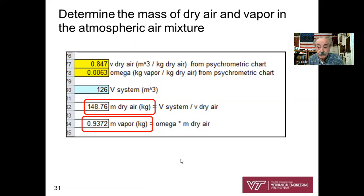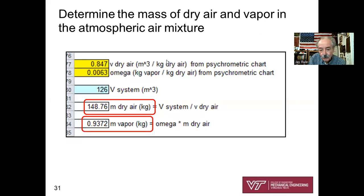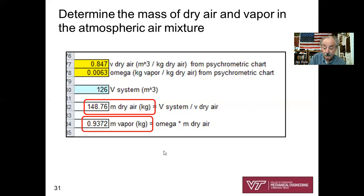With those values, calculations go fast. Dividing the room volume (126 m³) by the specific volume of dry air (0.847 m³/kg) gives the mass of dry air: 148.76 kg. Then multiplying by omega (0.0063) gives the mass of vapor: 0.9372 kilograms of vapor.